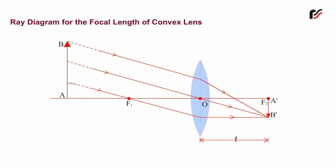The image A'B' obtained on the screen is real, inverted and highly diminished. That is, much smaller in size than the object AB.